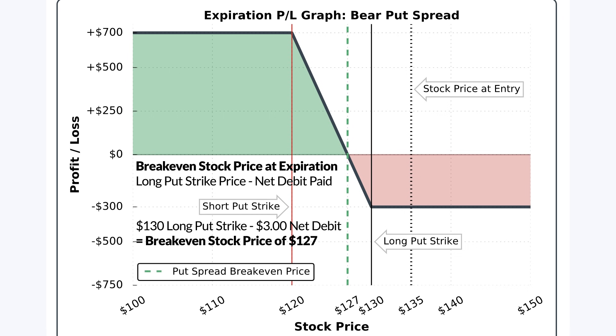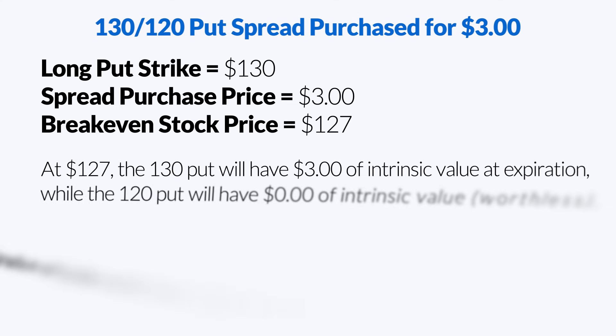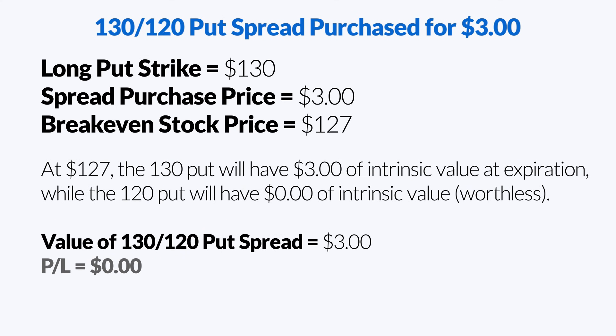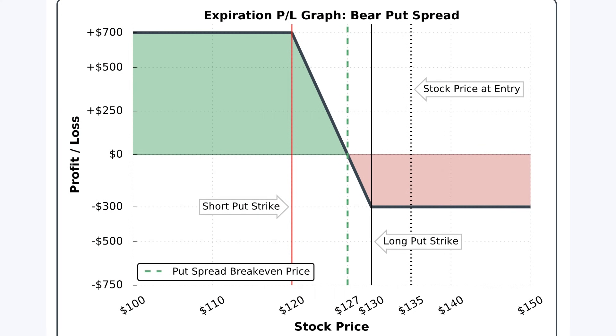The breakeven price is calculated as the long put strike price less the debit paid. Since I'm buying the 130 put option and paid $3 for this spread, the breakeven price for this bear put spread at expiration is $127. At $127, the 130 put option will expire with $3 of intrinsic value and the 120 put option will expire worthless, meaning the net value of the 130-120 put spread will be $3 — so I break even on the trade. Now let's look at some historical bear put spread examples.